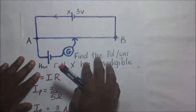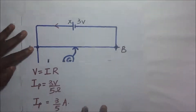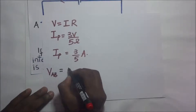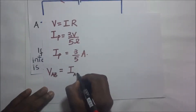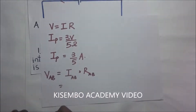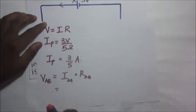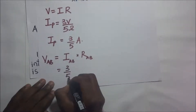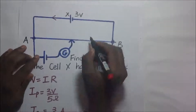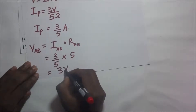After finding the amount of current being produced by this cell, that's the amount of current flowing through this wire. So we go ahead and find the PD across wire AB, which we call V_AB. The PD across wire AB is equal to the current going through that wire multiplied by the resistance of wire AB. The current going through wire AB is the primary circuit current we found, which is 3/5 amperes. So it's 3/5 multiplied by the resistance of wire AB, which is 5 ohms, and the potential difference across wire AB is 3V.